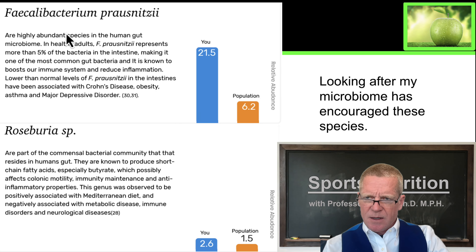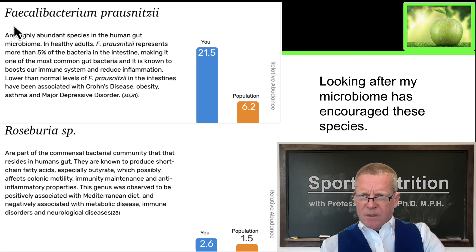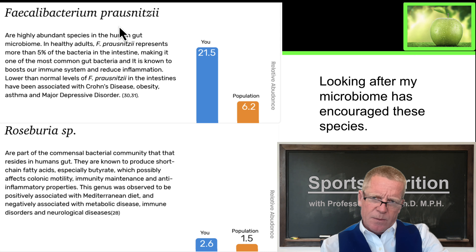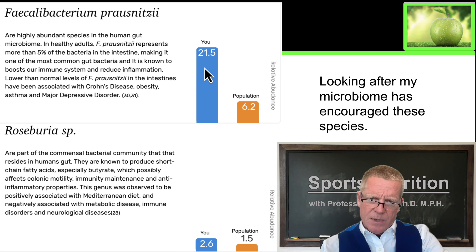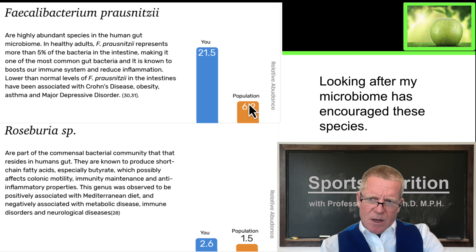That's a good start. Then we'll see some interesting things. We see here this Faecalibacterium prausnitzii — you can see that my level of prausnitzii is really high compared to many people in the population, although this is a very abundant bacterium in the population. That's a good thing because this particular bacterium is known to boost our immune system and reduce inflammation.